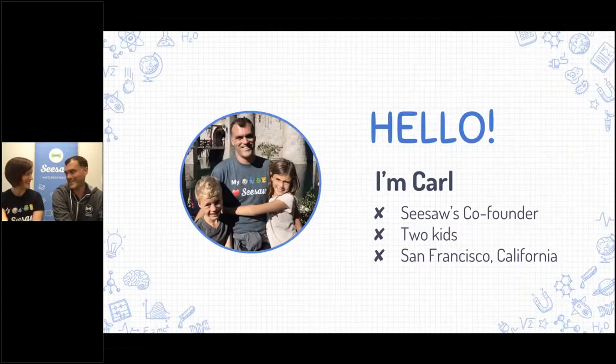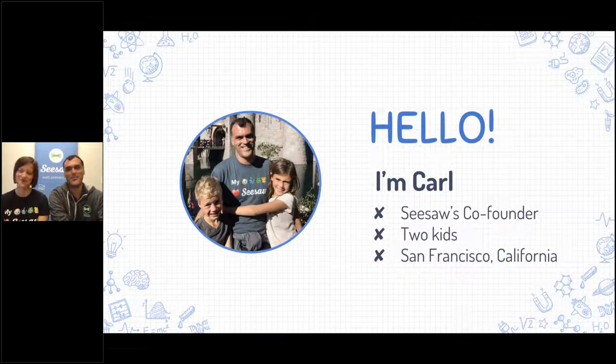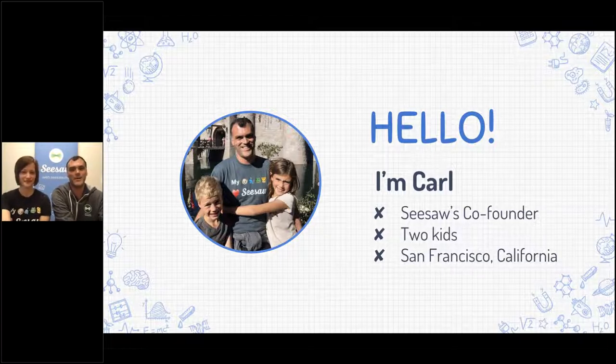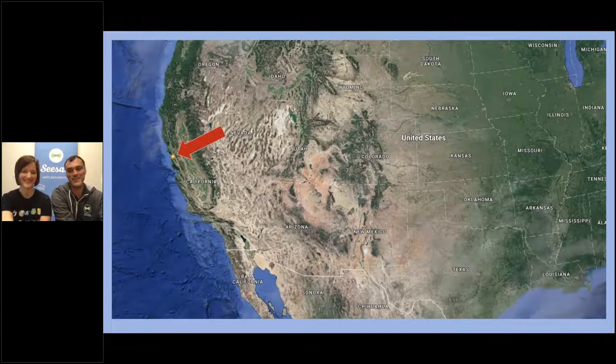So hello, Carl! Hi there! Really excited to have you! Hi everyone! Yeah, my name's Carl. I'm one of Seesaw's co-founders. I've got two kids of my own, that's Charlie and Lily there. And we are coming to you from San Francisco, California, which is there on the map, the home of the Golden Gate Bridge.